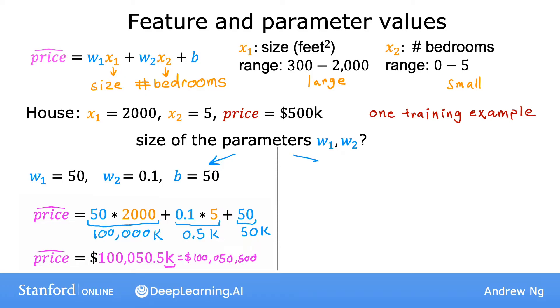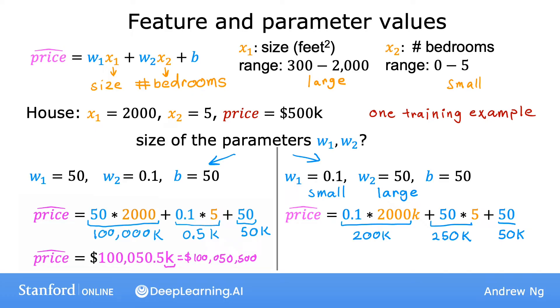Now let's take a look at another possibility. Say w1 and w2 were the other way around. w1 is 0.1, and w2 is 50, and b is still also 50. In this choice of w1 and w2, w1 is relatively small and w2 is relatively large. Here the predicted price is 0.1 times 2000 plus 50 times 5 plus 50. The first term becomes 200k, the second term becomes 250k, and then plus 50. So this version of the model predicts a price of $500,000, which is a much more reasonable estimate and happens to be the same price as the true price of the house.